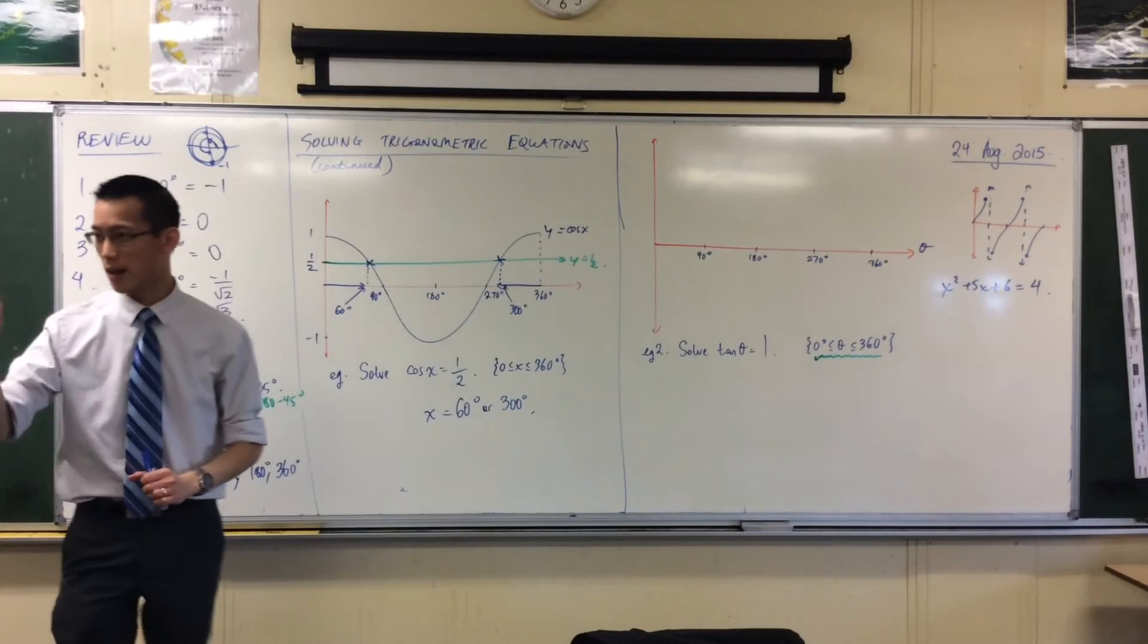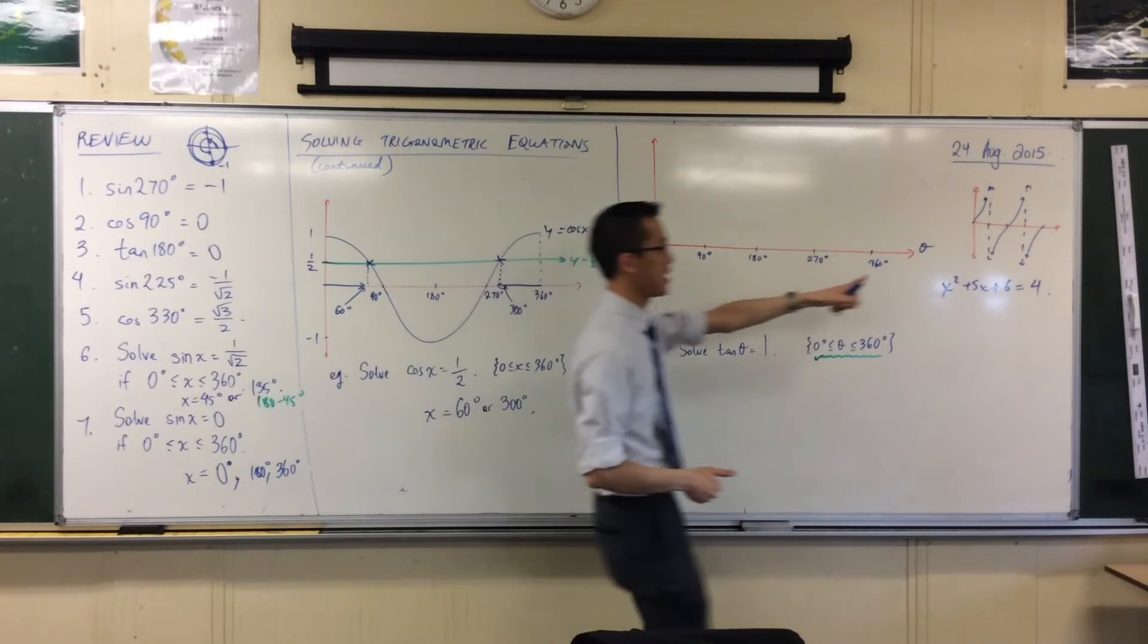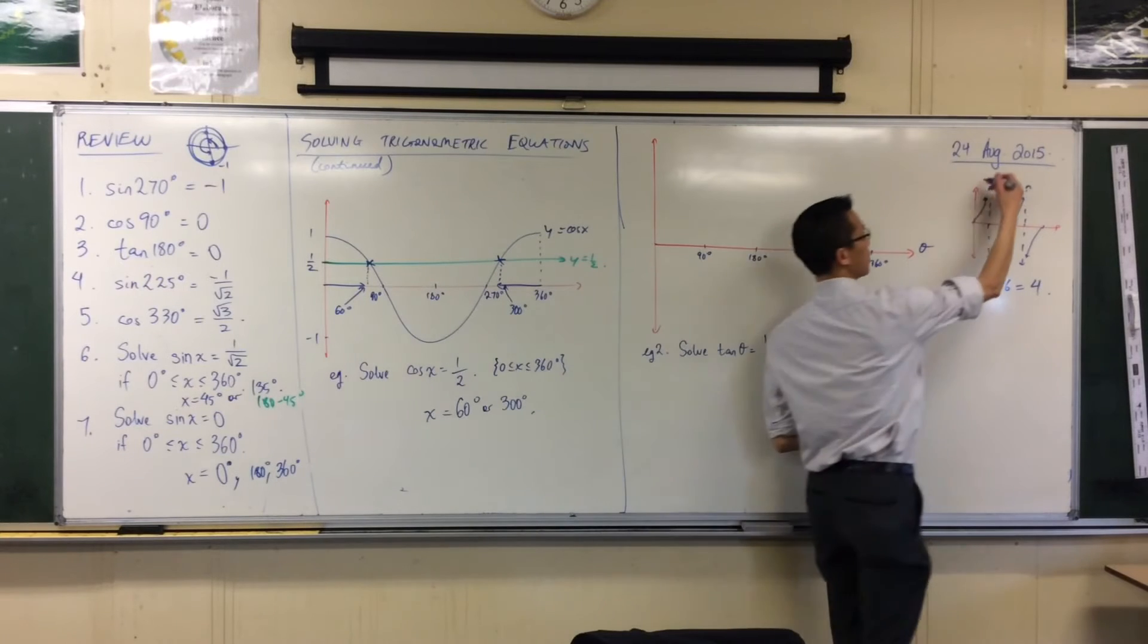Now those two angles that I just put in, 90 and 270, that's where these weirdo vertical dotted lines come in. Does anyone remember what they're called? They start with an A? They're called asymptotes, very good.